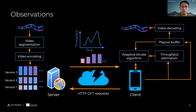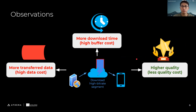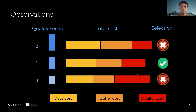Let's start with the observations. In HTTP Adaptive Streaming, the video at the server side is encoded into multiple quality versions, and each quality version is then split into several segments. The client will decide which quality versions to be downloaded based on an adaptive bitrate algorithm. Downloading a high bitrate segment will result in more transfer data or high data cost, more download time or higher buffer cost. However, we achieve higher quality or less quality cost. Therefore, the adaptive bitrate algorithm can choose the quality version that has the lowest total cost to trade-off data cost, buffer cost, and quality cost.